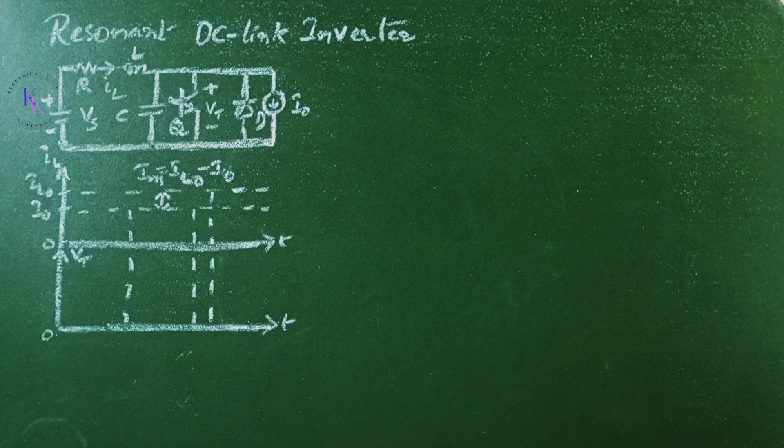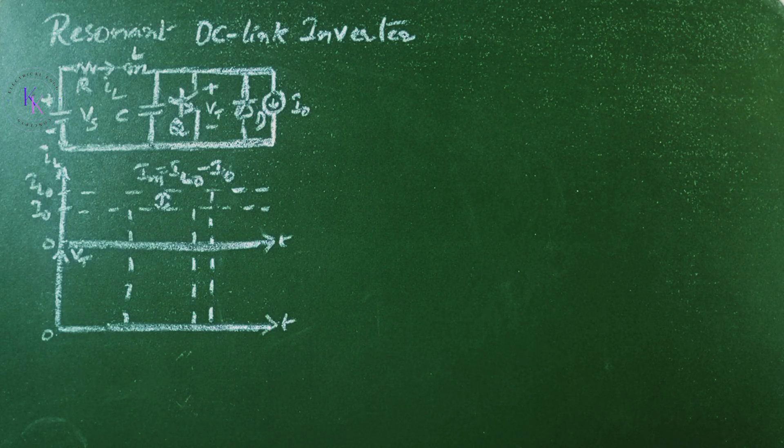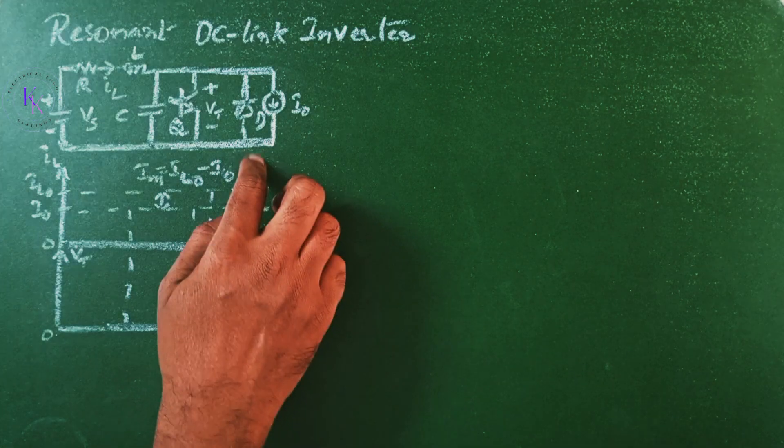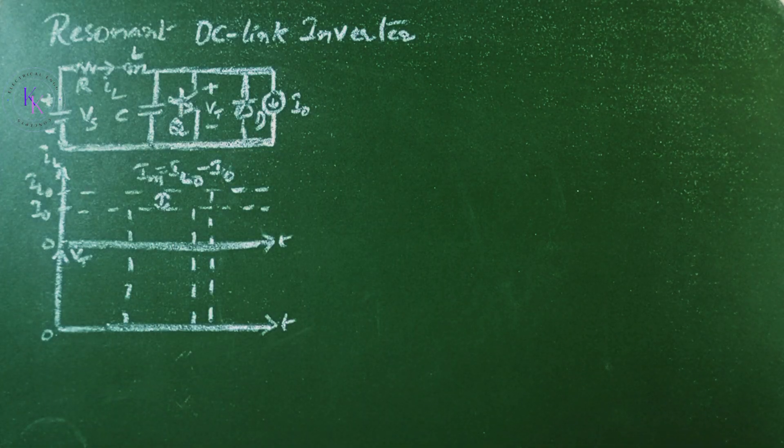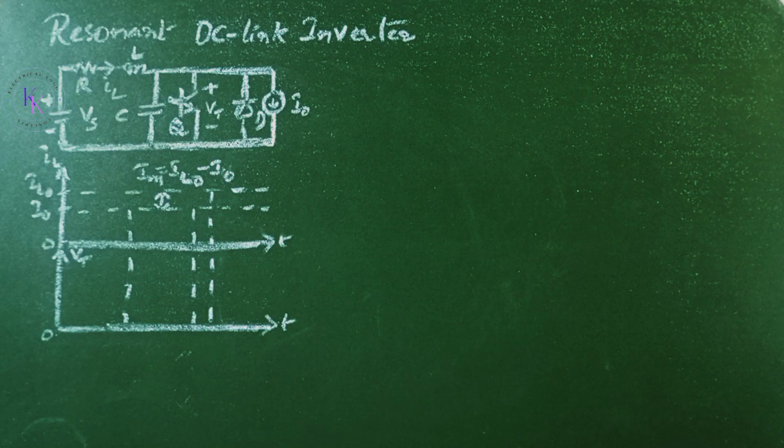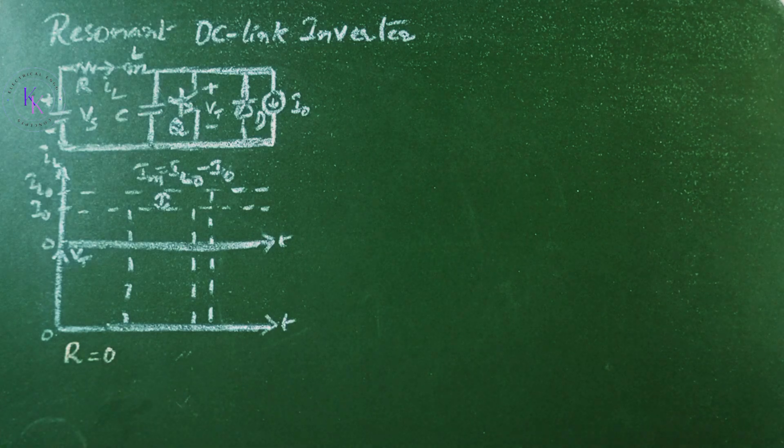The resonant link, which is similar to the class E inverter, is shown here, where I0 is the current drawn by the inverter. Assuming a lossless circuit, that is the resistance R equals to 0,